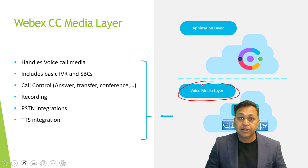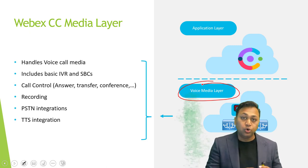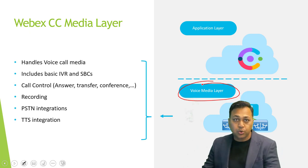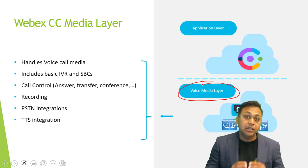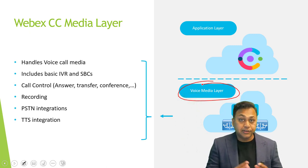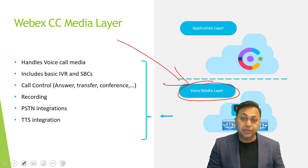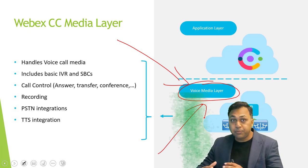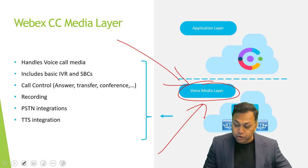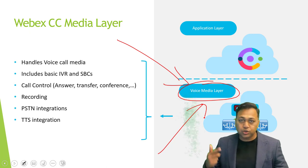The media layer basically handles all voice call media, including the IVR and any SIP connections. If you are a company that wishes to register your own voice gateway with Cisco WebEx Contact Center, or if you want to obtain a SIP trunk from a Cisco-approved cloud vendor, you will establish a SIP trunk into your voice media layer. This is where the PoPs are sitting — the point of contact from external devices such as Call Manager, CUBE gateway, or a third-party SIP provider.